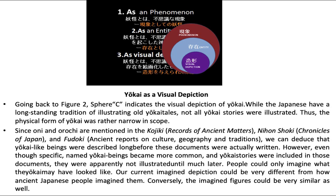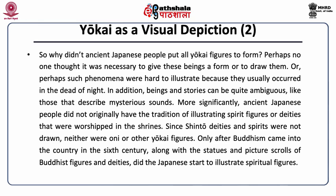However, even though specific named Yokai beings became more common and Yokai stories were included in documents, they were apparently not illustrated until much later. People could only imagine what the Yokai may have looked like. Our current imagined depiction could be very different from how ancient Japanese people imagined them — or conversely, the imagined figures could be very similar. So why didn't ancient Japanese people put all Yokai figures to form?